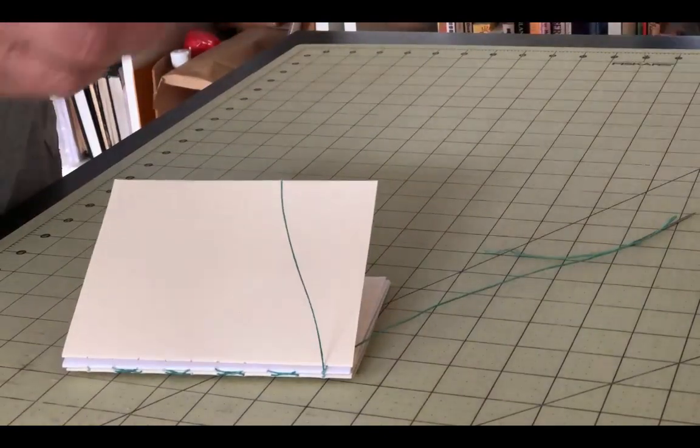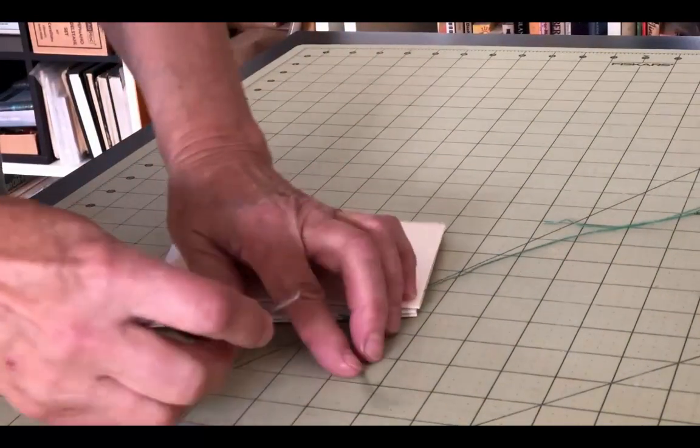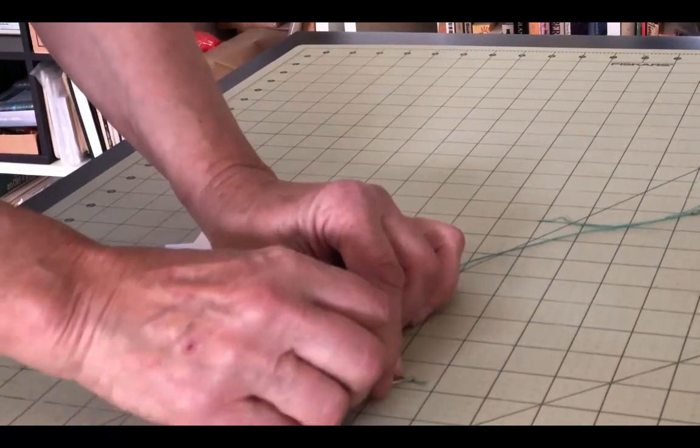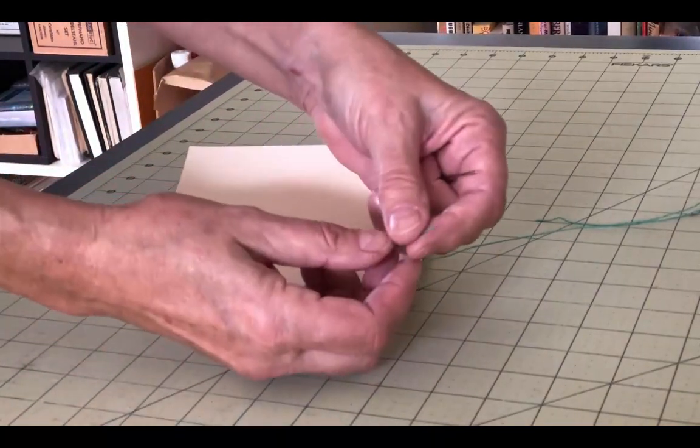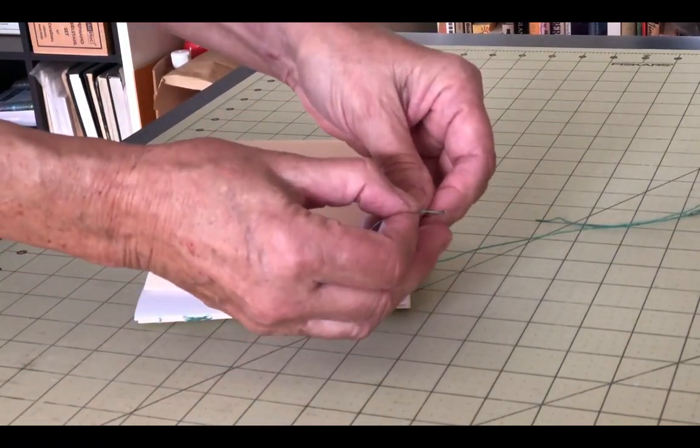Next, thread a needle onto that tail and sew back in through the same hole that it's coming out of. The thread you just wrapped around it will keep it from popping back inside.